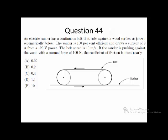The sander is 100% efficient and draws a current of 9 Amperes from a 120 volt power source. The belt speed is 10 meters per second. If the sander is pushing against the wood with a normal force of 100 Newtons, the coefficient of friction is most nearly which of the following?